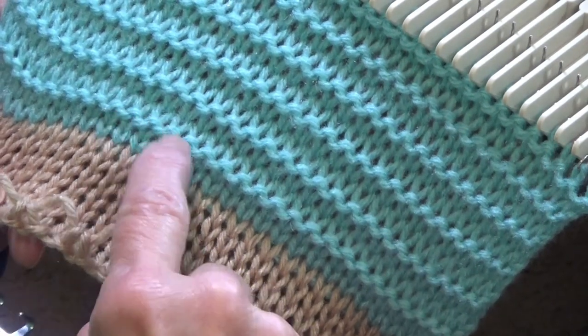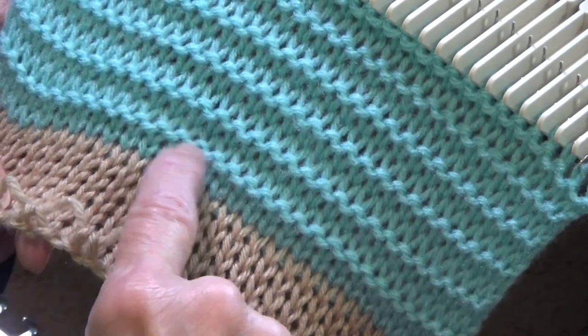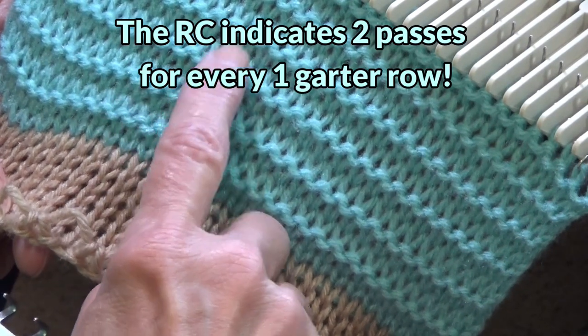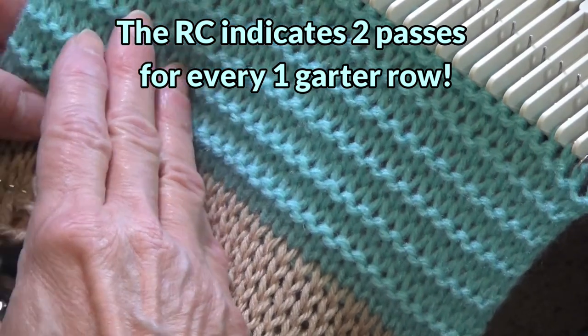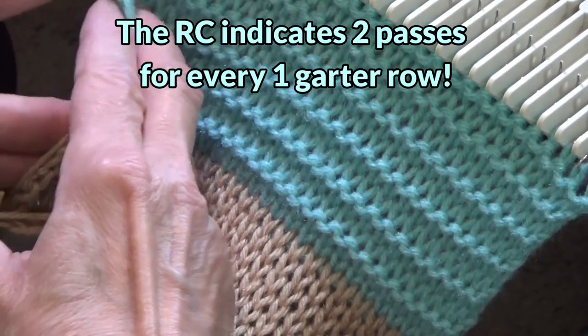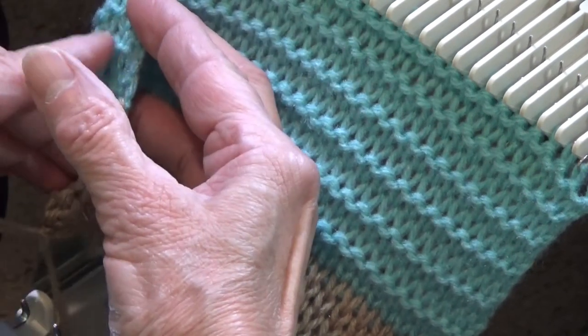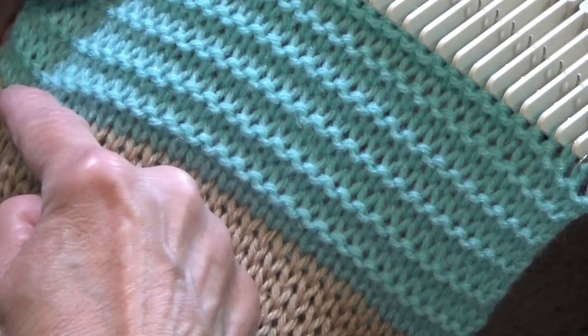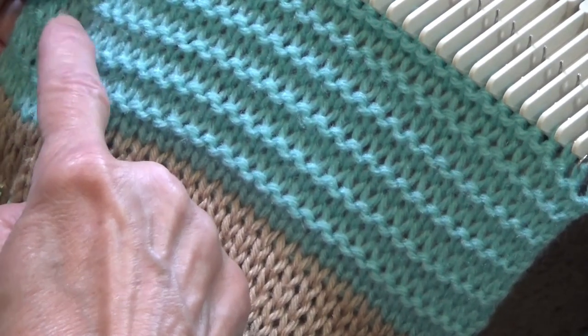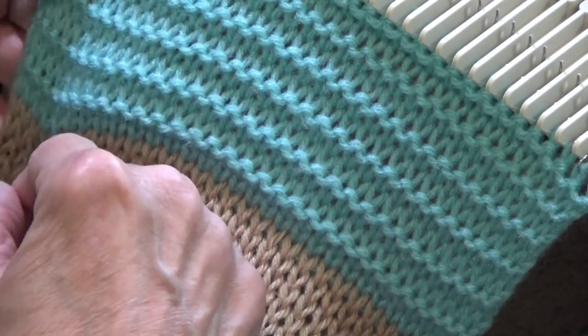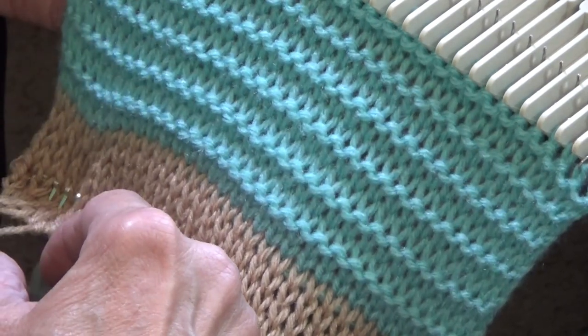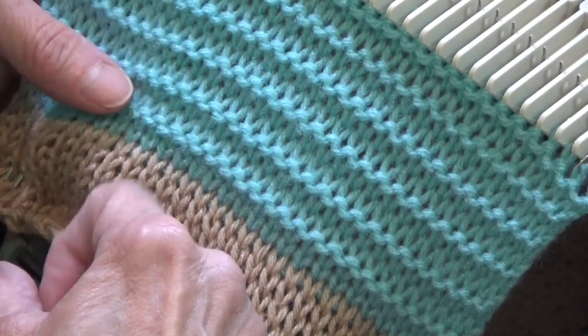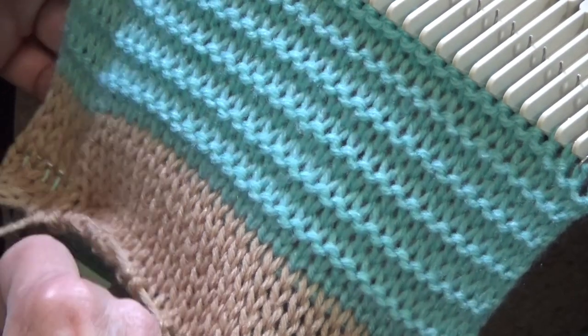Every garter row will be a purl side, a purl ridge. So one, two, three, four, five, six. Now, if I look at the back where I turn it, you'll find that I have one, two, three, four, five, and I believe six because I have one here. One, two, three, four, five, six. So as long as you have six on both sides, you have 12. If you had five ridges on one side and six on the other, then you have 11 rows. I have 12 rows here.